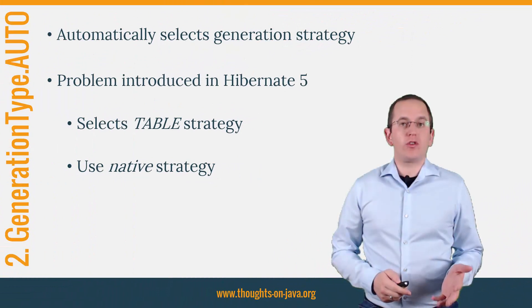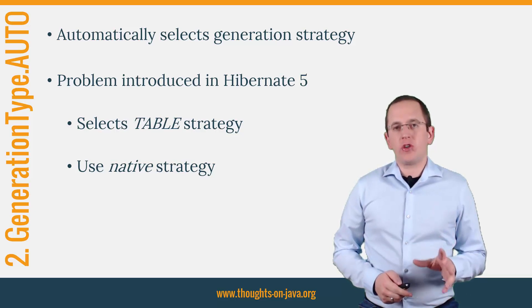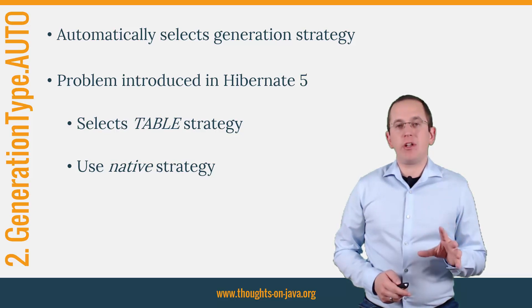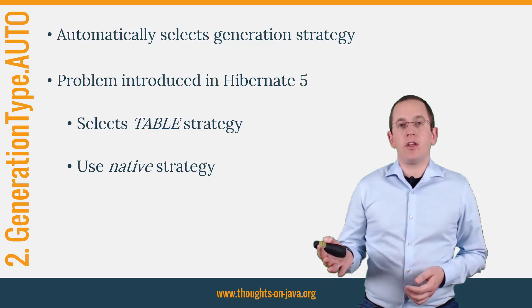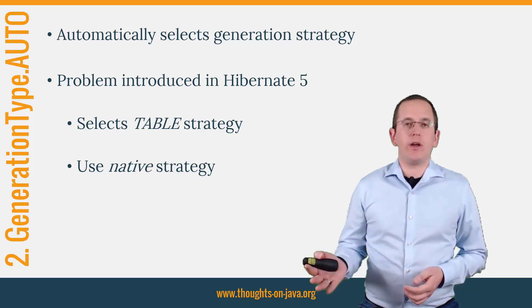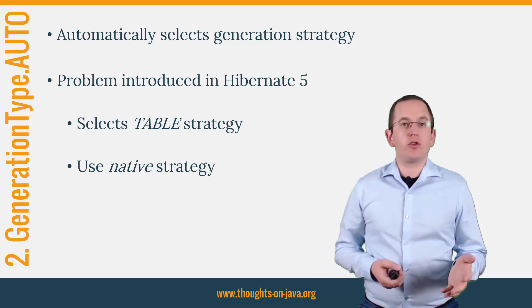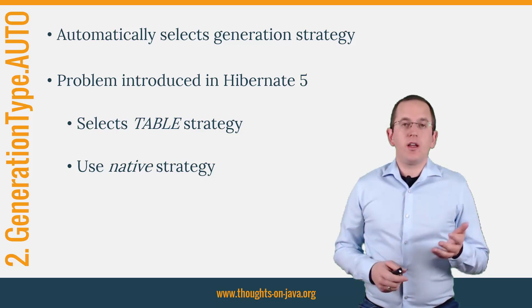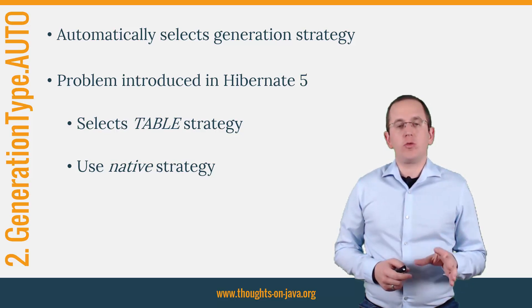2. Problems with GenerationType.AUTO in Hibernate 5. When you use GenerationType.AUTO, Hibernate selects the generation strategy based on the Hibernate dialect. That's a common approach if you need to support multiple databases. In older versions, Hibernate selected GenerationType.IDENTITY for MySQL databases — that was a good choice, as it's the most efficient approach available. But that changed in Hibernate 5. It now selects GenerationType.TABLE, which uses a database table to generate primary keys.